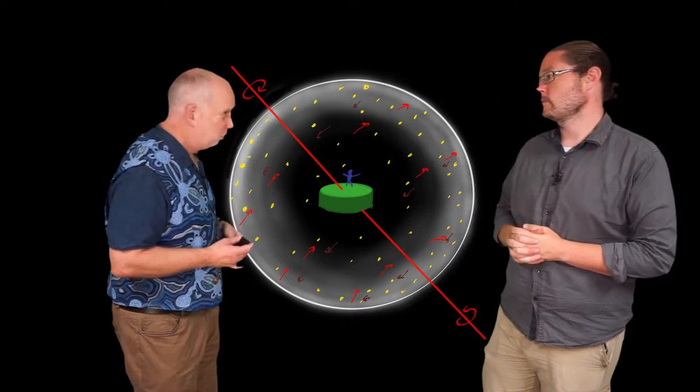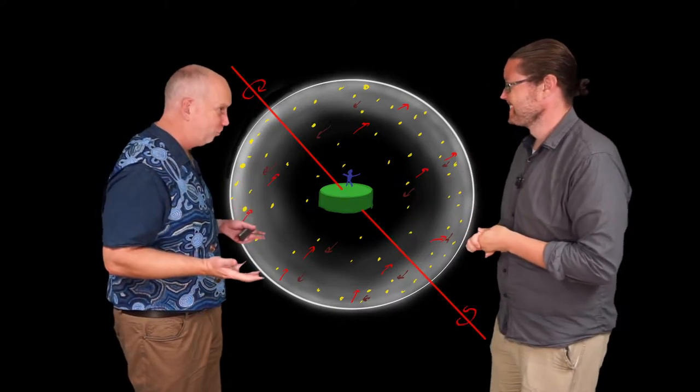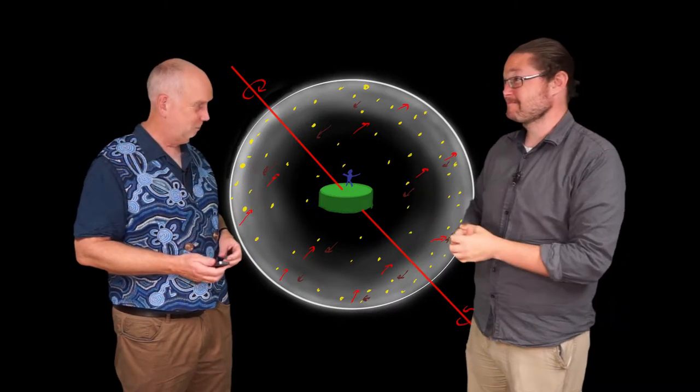So, the constellations don't change as they move across the sky, do they? I mean, Orion still looks like Orion even if it's no longer near the tree. It still looks like Orion when it's above the tree.